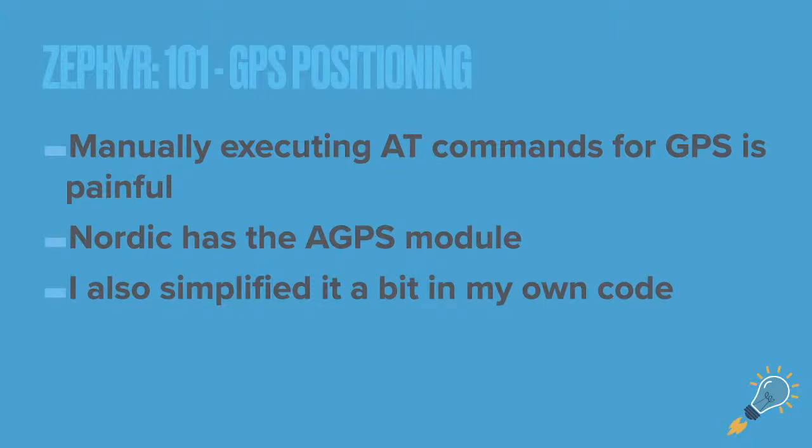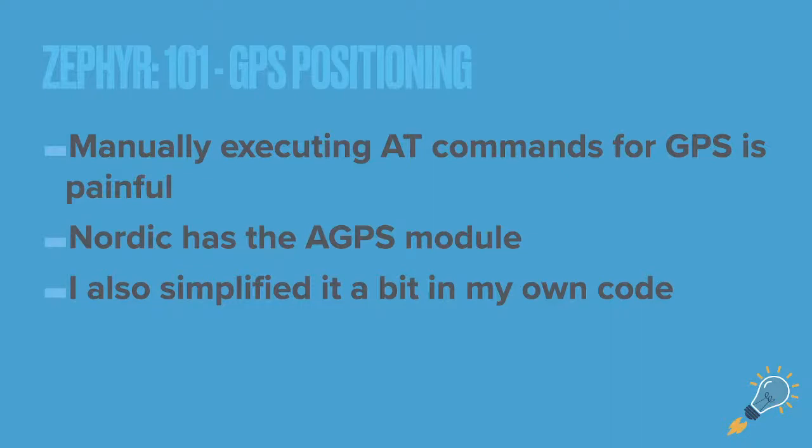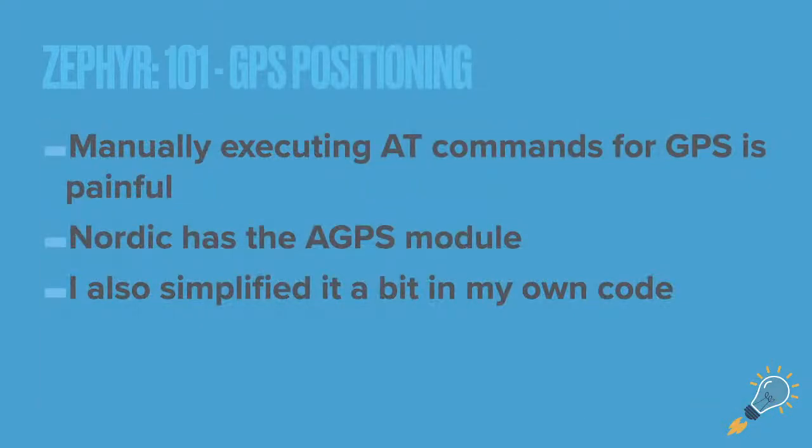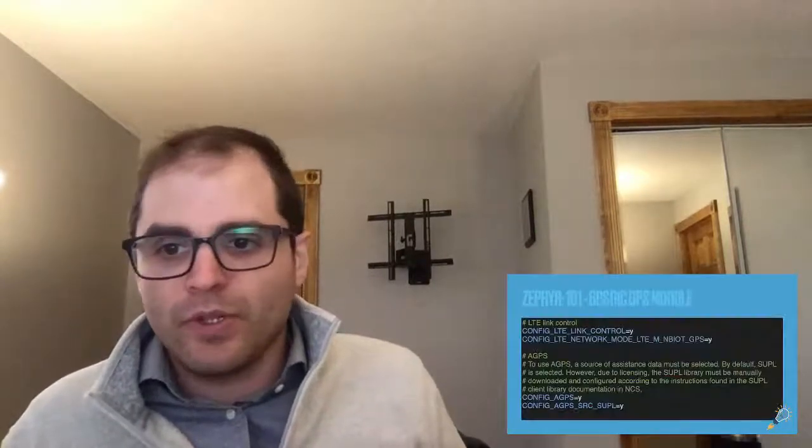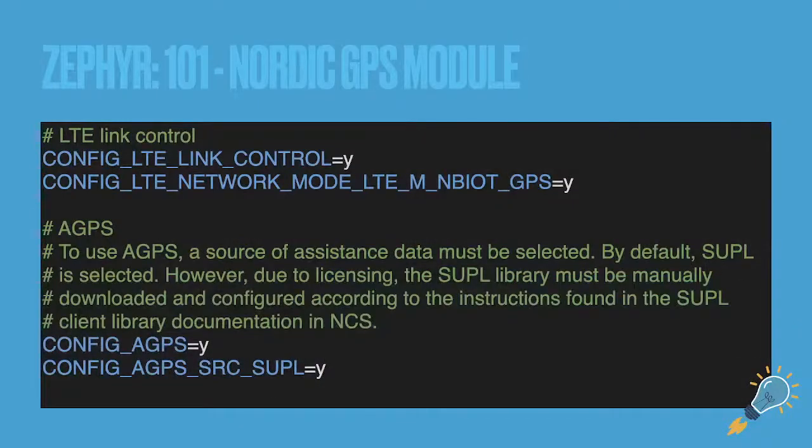So like I mentioned, those AT commands can be hairy. Nordic has their A-GPS module, which simplifies a little bit. And then I actually kind of made a, I also linked to the A-GPS, the GPS module and my own code. So what I did for my own code is I wrapped all that stuff and I just made a simple start, stop, and init. There's also some stuff for A-GPS, but that's a handy feature. But even if you're not using A-GPS, three calls.